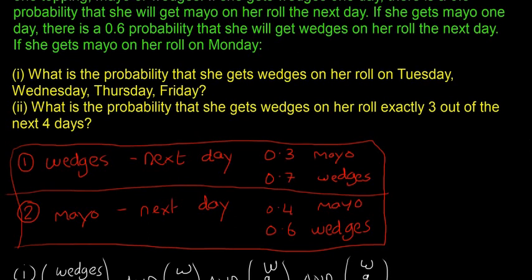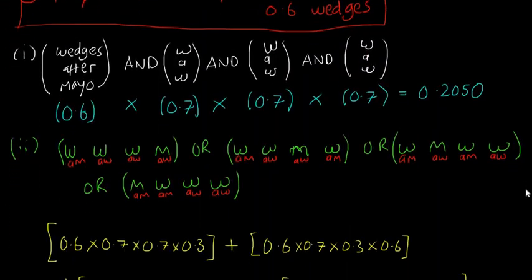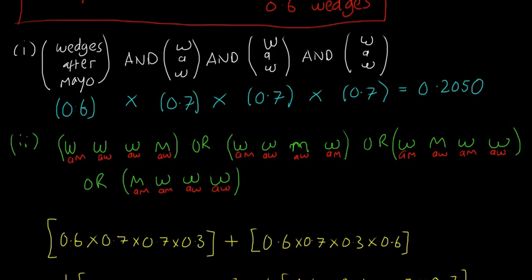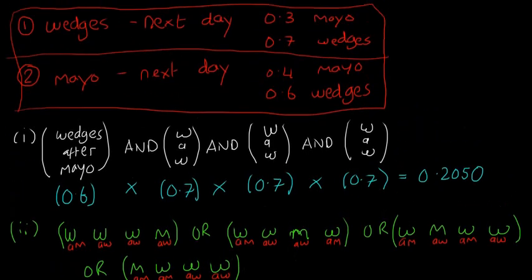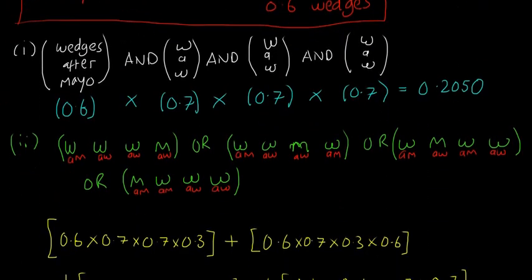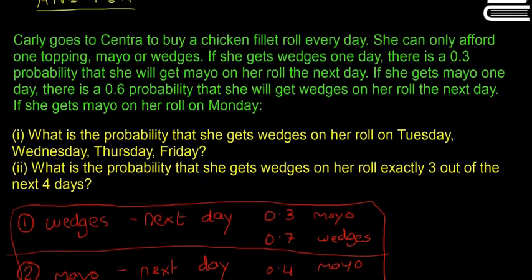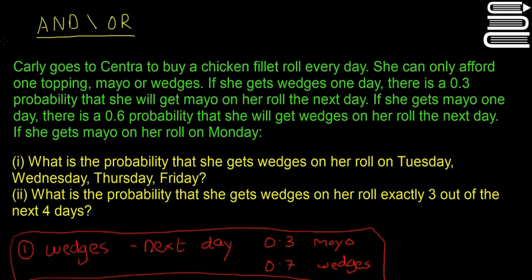So 0.35376 is the probability she gets wedges on her roll exactly three out of the next four days. This example was complicated but it shows how careful and meticulous you have to be — don't forget the different cases. The main thing to remember: AND means multiply, OR means add. In the next videos we'll look at event diagrams and how they can help with probability.